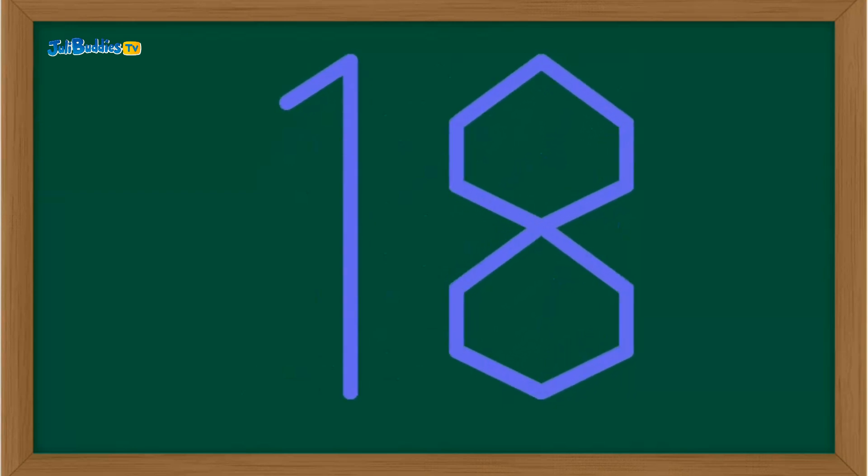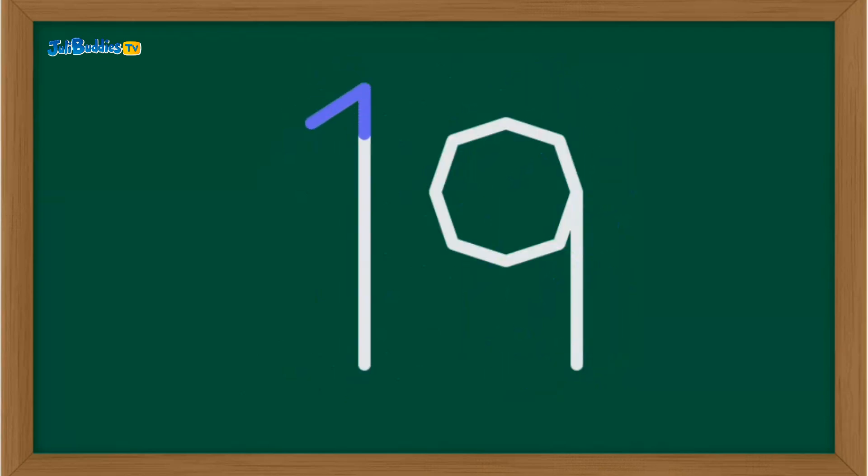You're so close. Here's nineteen. One straight line for the one, and then a circle and a line down for the nine. Hooray for nineteen.